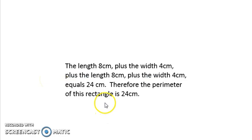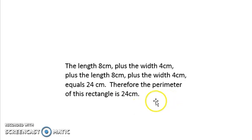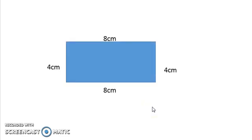We're going to add 8 centimeters plus 4 centimeters plus 8 centimeters plus 4 centimeters. The length, which was 8 centimeters, plus the width of one side, which was 4 centimeters, plus the length of the opposite side, which was 8 centimeters, plus the width of the opposite side, which was 4 centimeters, equals 24 centimeters. Therefore, the perimeter of this rectangle is 24 centimeters.